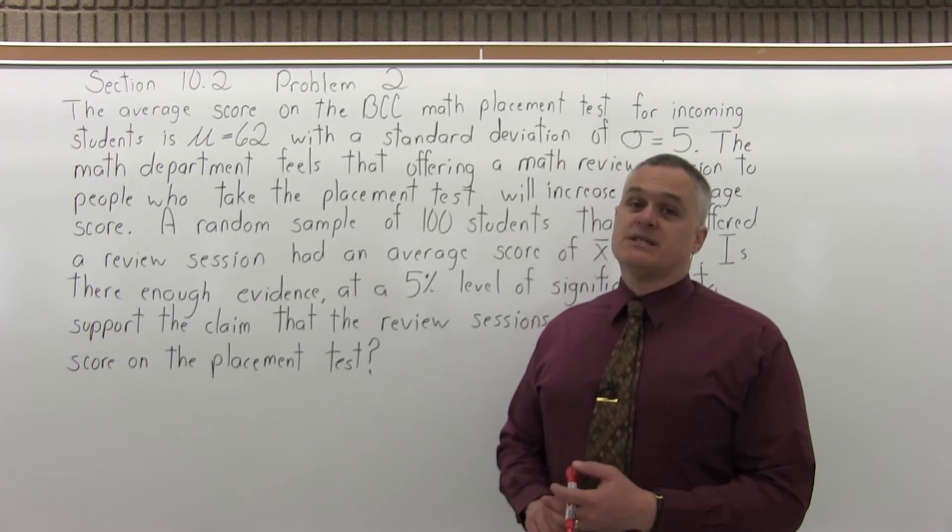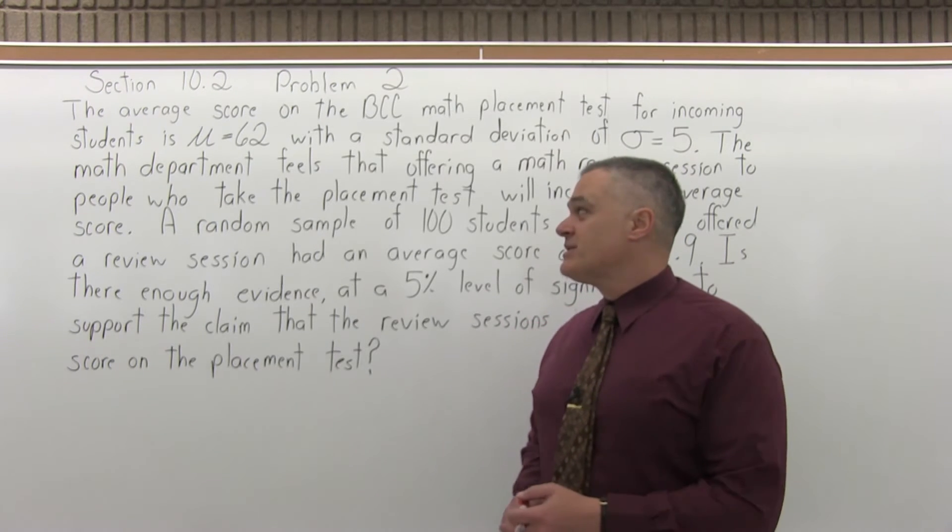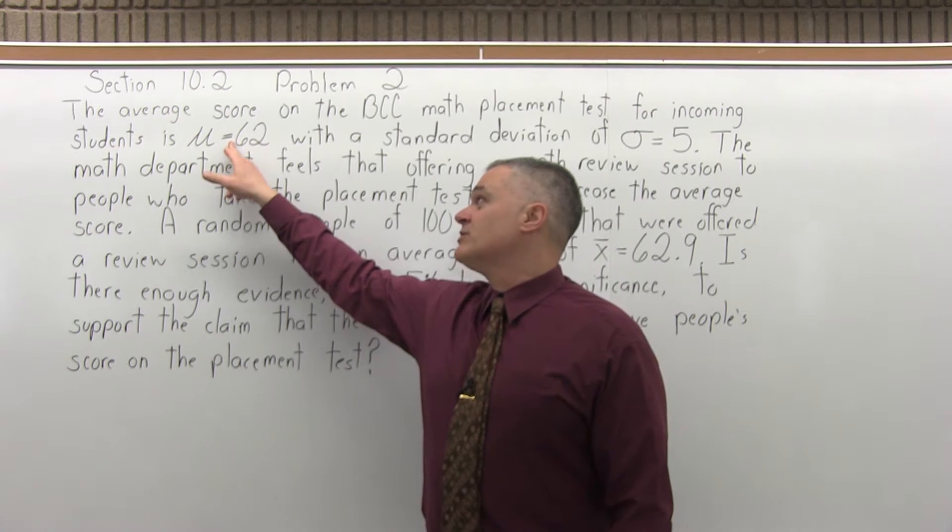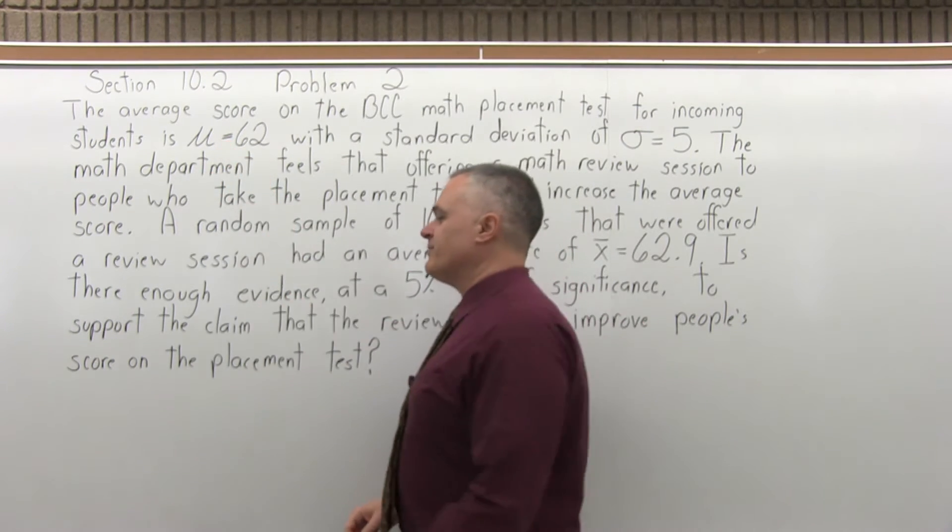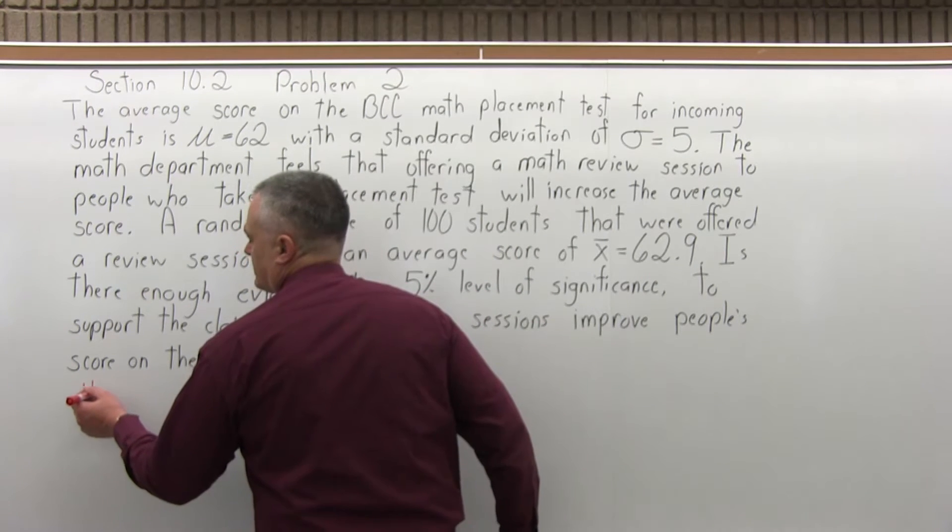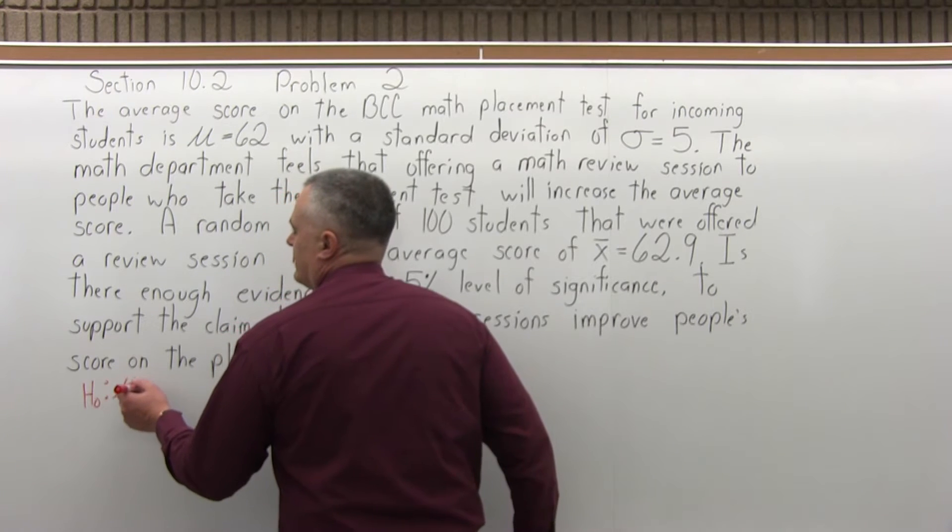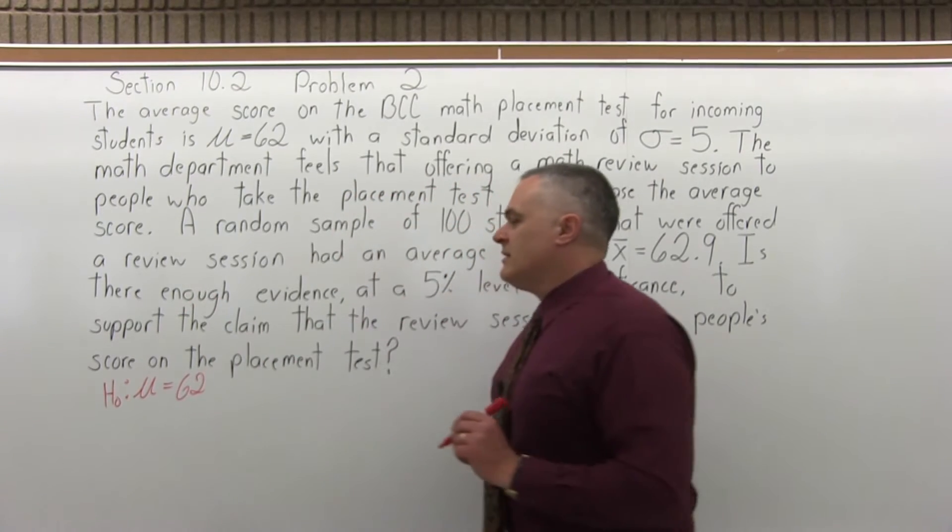So the six step process, step one, state the null hypothesis. The null hypothesis will have the symbol mu with some condition of equality. So it could just be equal or greater than or equal or less than or equal to. In this case, it's equal to. So we will say that the null hypothesis, the symbol is capital H with a subscript of 0, mu equals 62. That's step one.